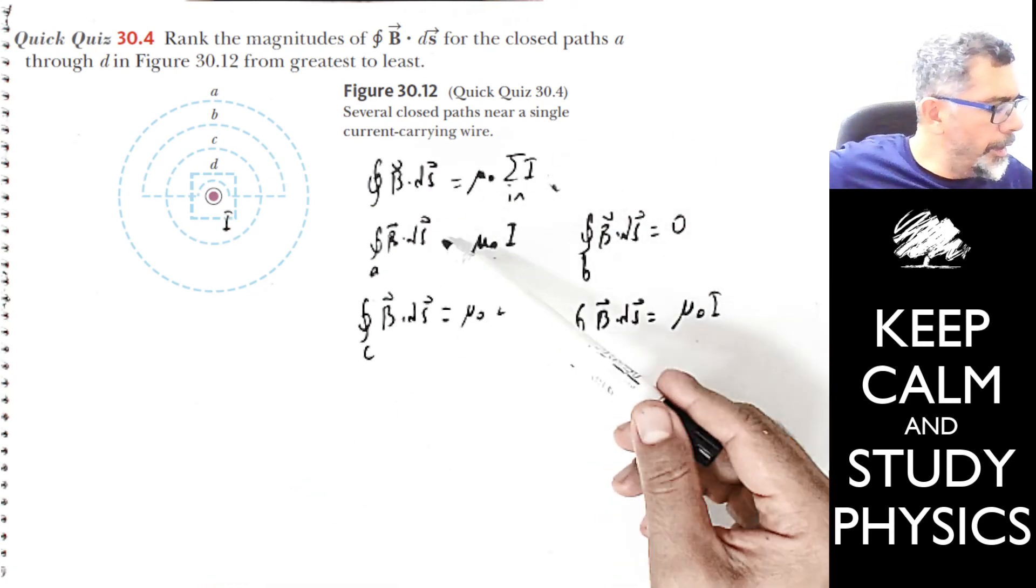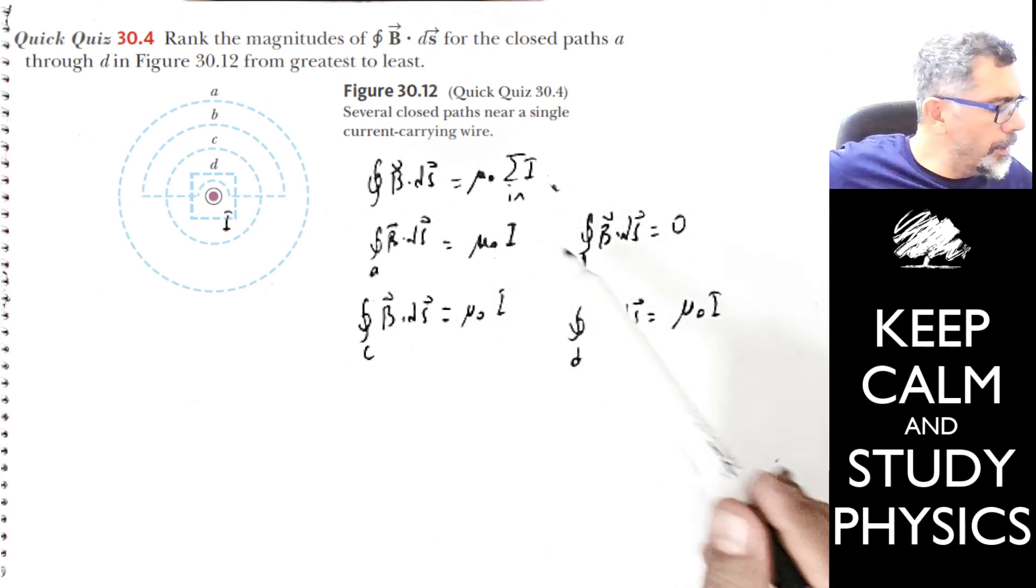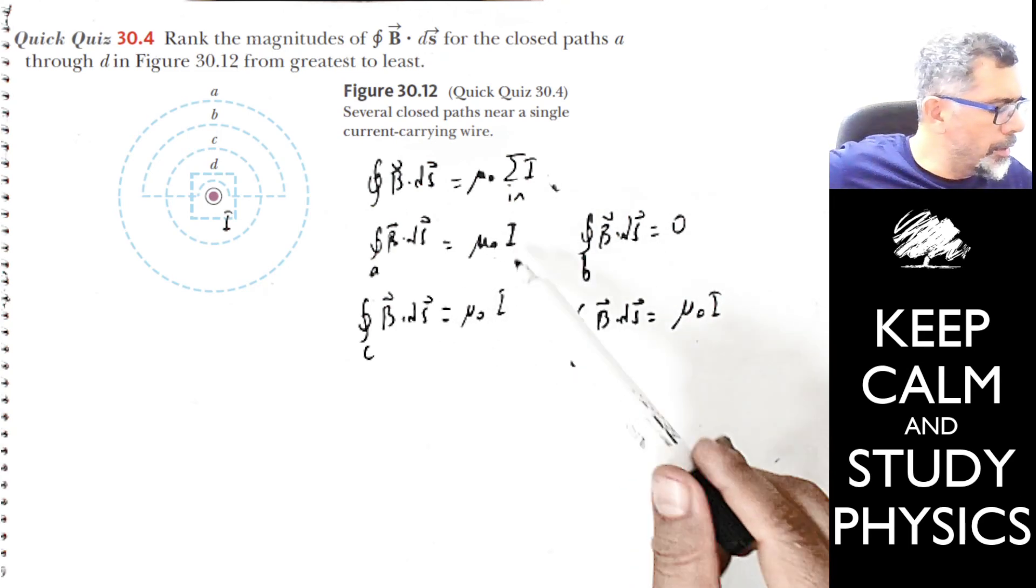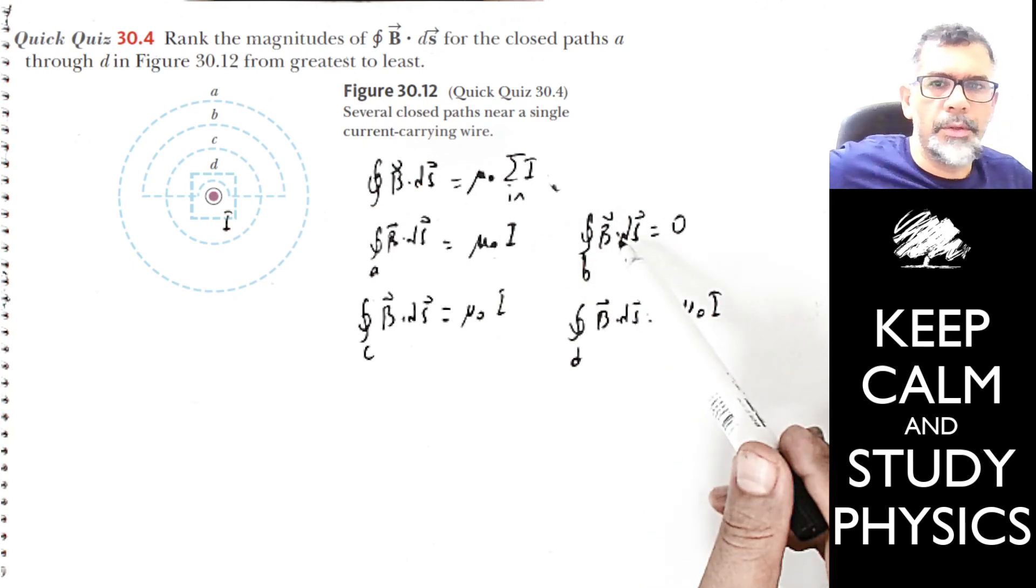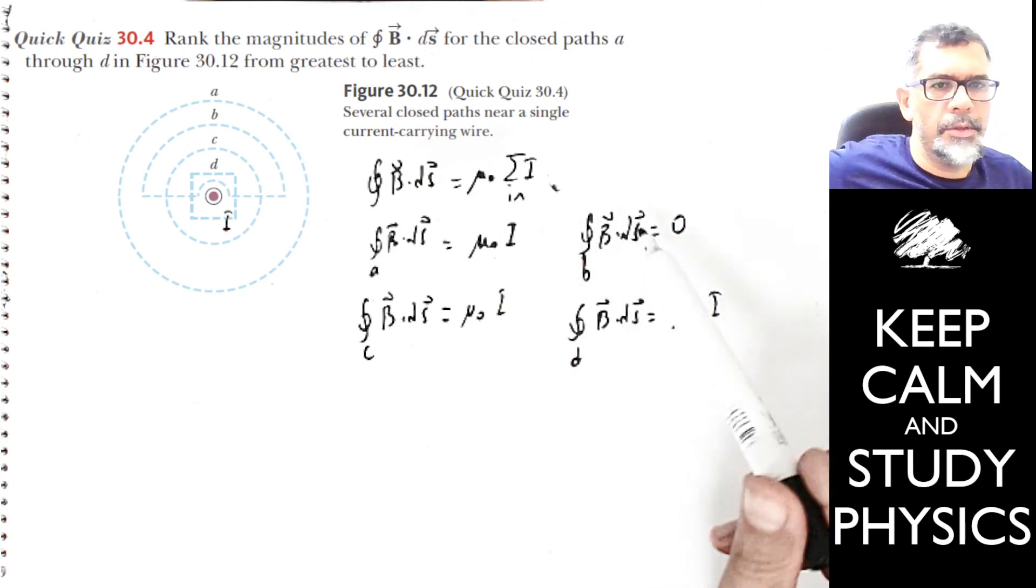The results for paths A, C, and D are all equal to mu₀I, and the result for path B is zero.